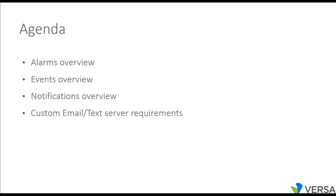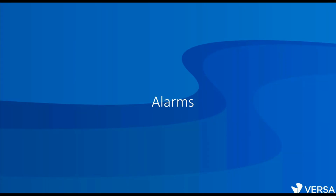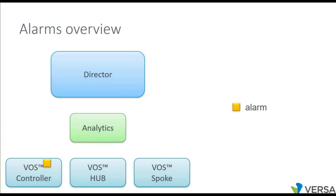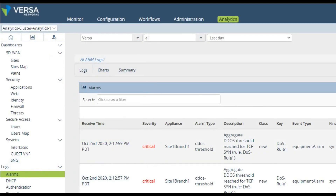First of all, what are alarms? Alarms are messages which are being sent from the controllers, from your hub devices, or from your spoke devices. Any devices which have Versa OS installed on them can generate alarms, which are going to be sent to the analytics system. You can see them in the analytics screen if you click on the alarm section — here on the right you can see all the alarms being generated for this particular organization.